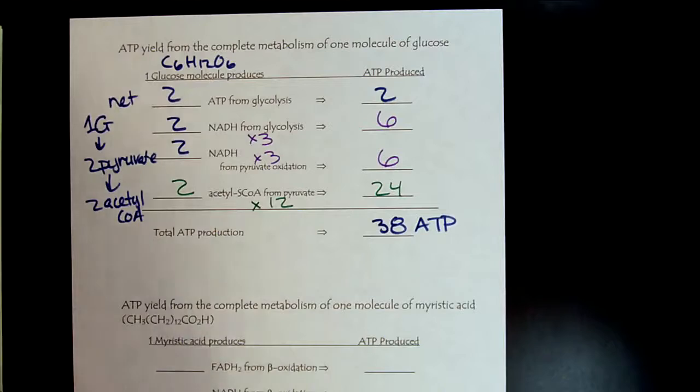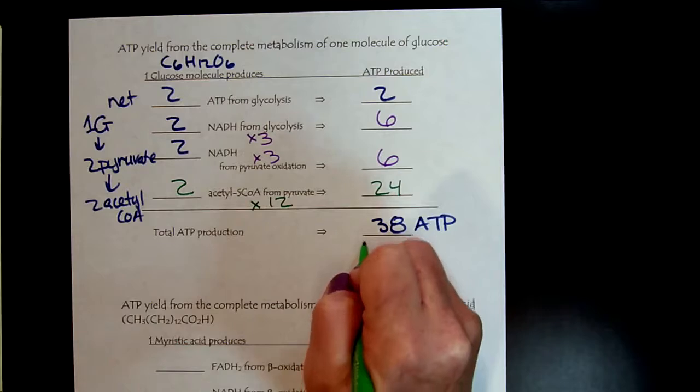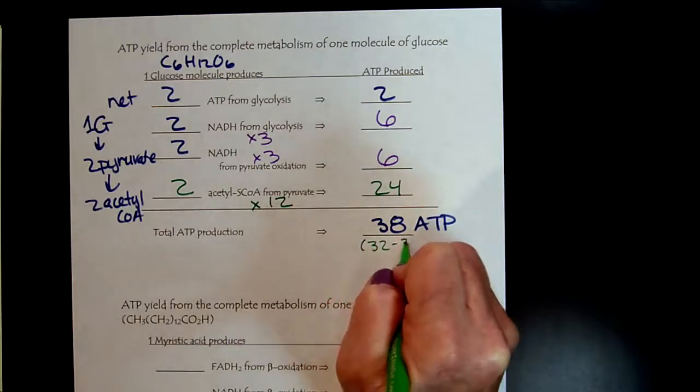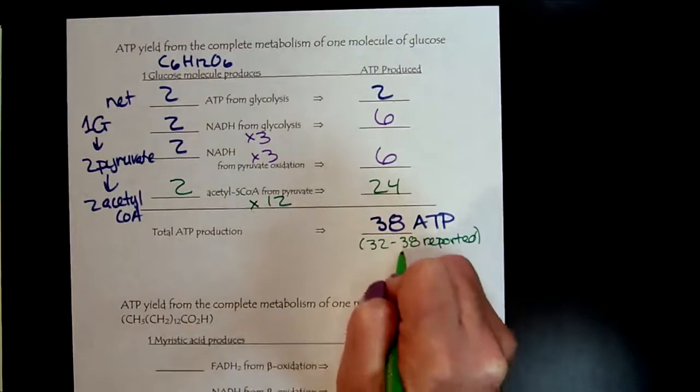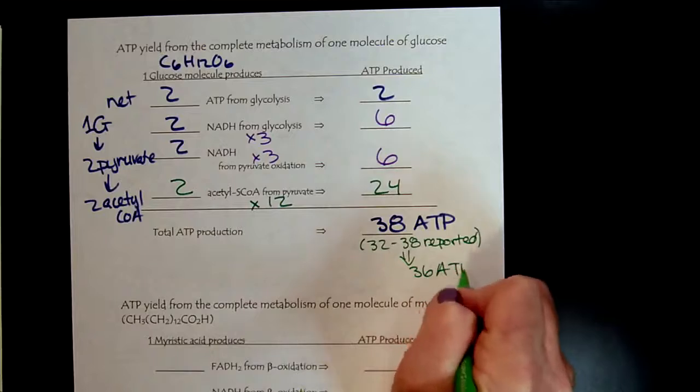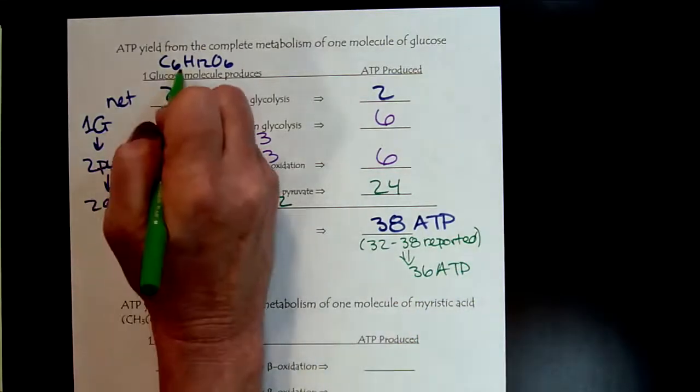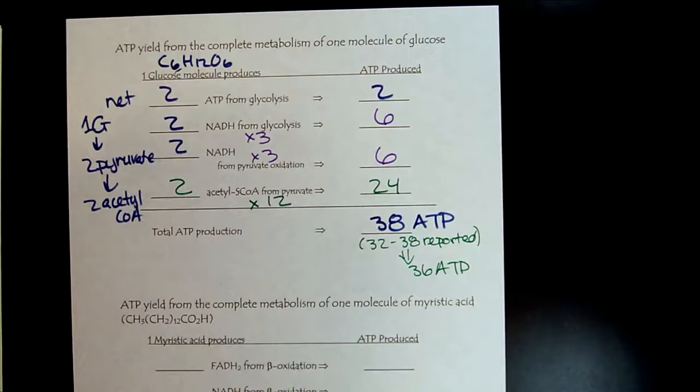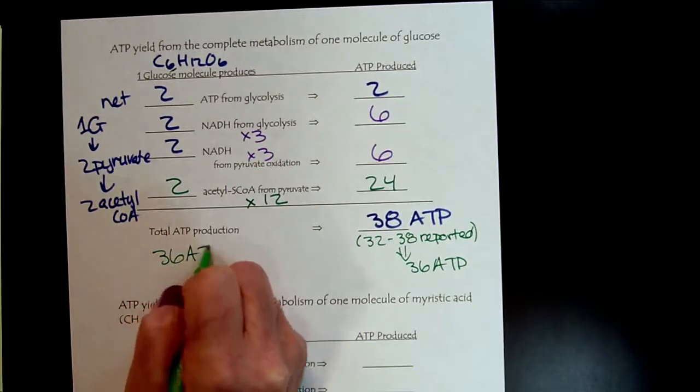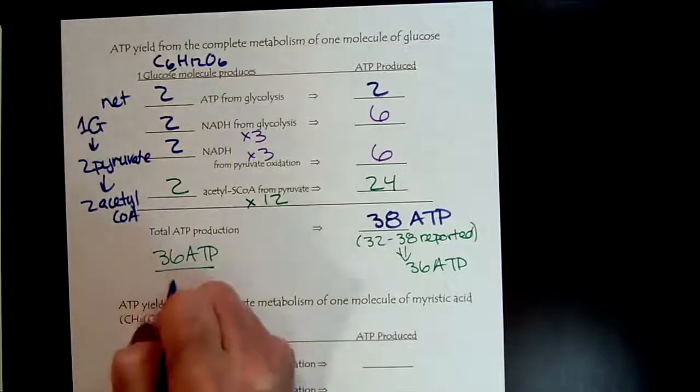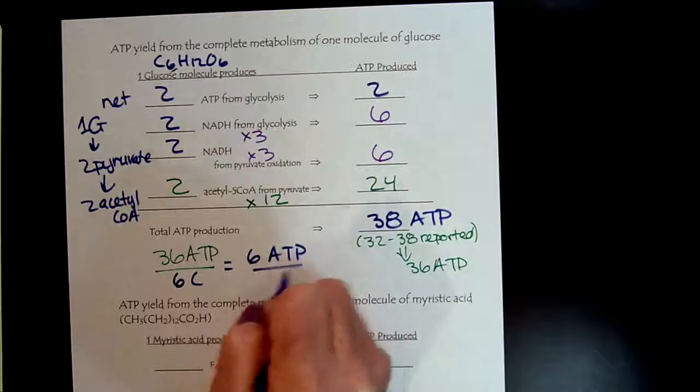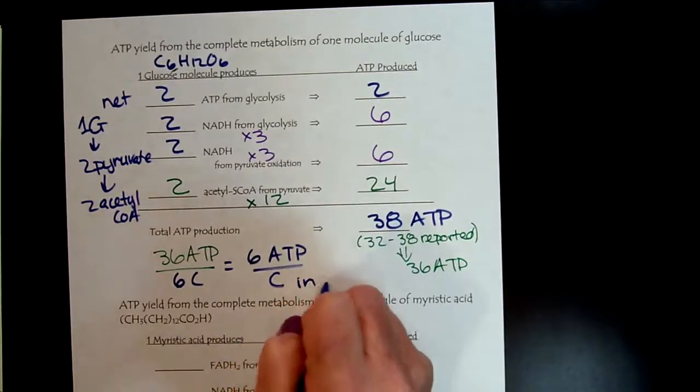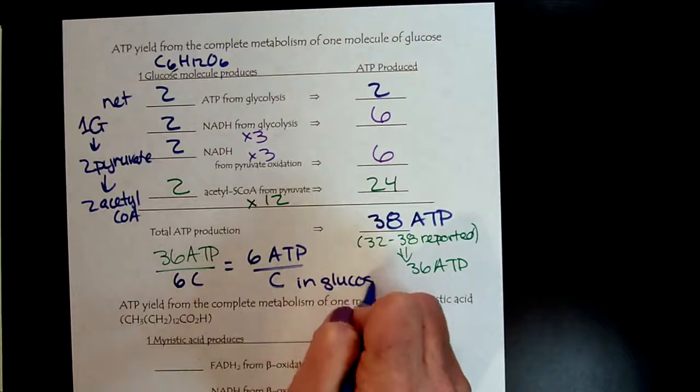Now, don't get too attached to this number. When you start looking through different textbooks and different resources, they'll say anywhere from 32 to 38 are reported. And typically 36 is the most common answer. And I think the reason for that is because there are six carbons. So if we have 36 ATP and we started with six carbons, we could see that we get six ATP per carbon in the glucose.